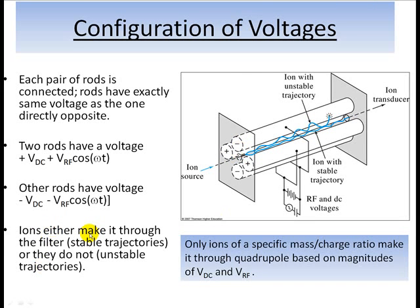And so ions, basically, they either make it through this filter and they're detected by this ion transducer, or they do not make it through the filter. Only ions of a specific mass charge ratio make it through quadrupole at any particular time.